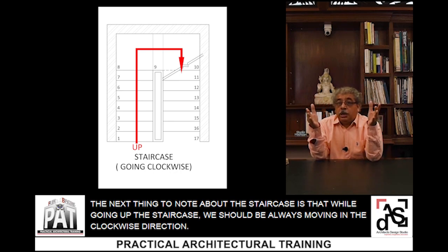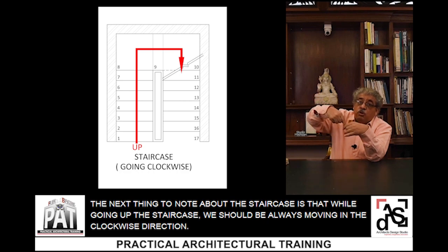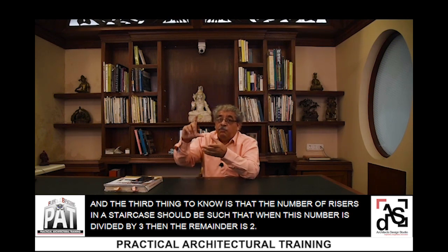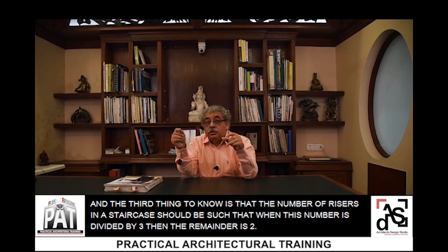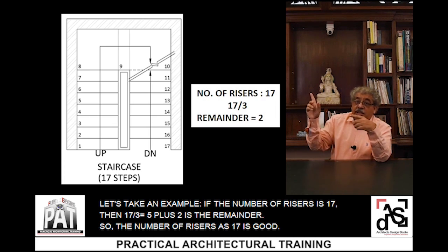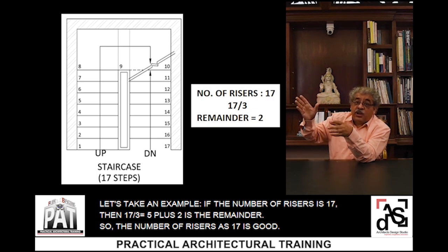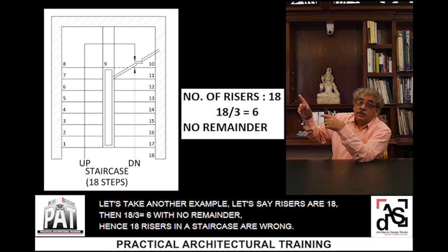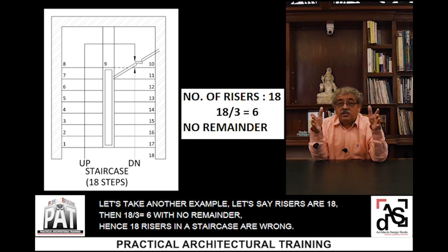The next thing to note about the staircase is that while going up, we should always be moving in the clockwise direction. The third thing to know is that the number of rises in a staircase should be such that when divided by 3, the remainder is always 2. For example, if the number of rises is 17, then 17 divided by 3 is 5 remainder 2 — so 17 rises is good. If rises are 18, then 18 divided by 3 is 6 with no remainder — hence 18 rises is considered wrong.